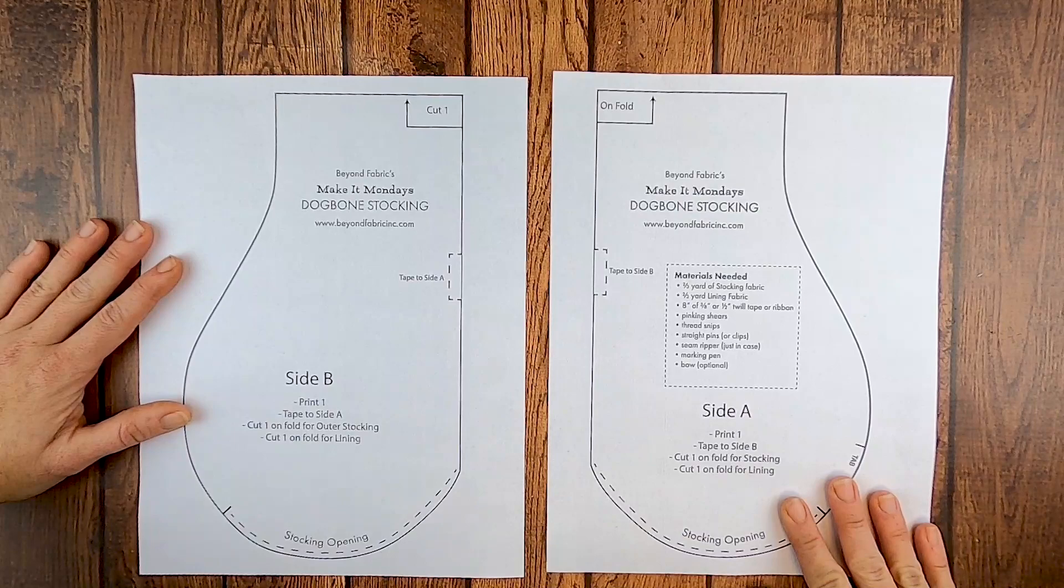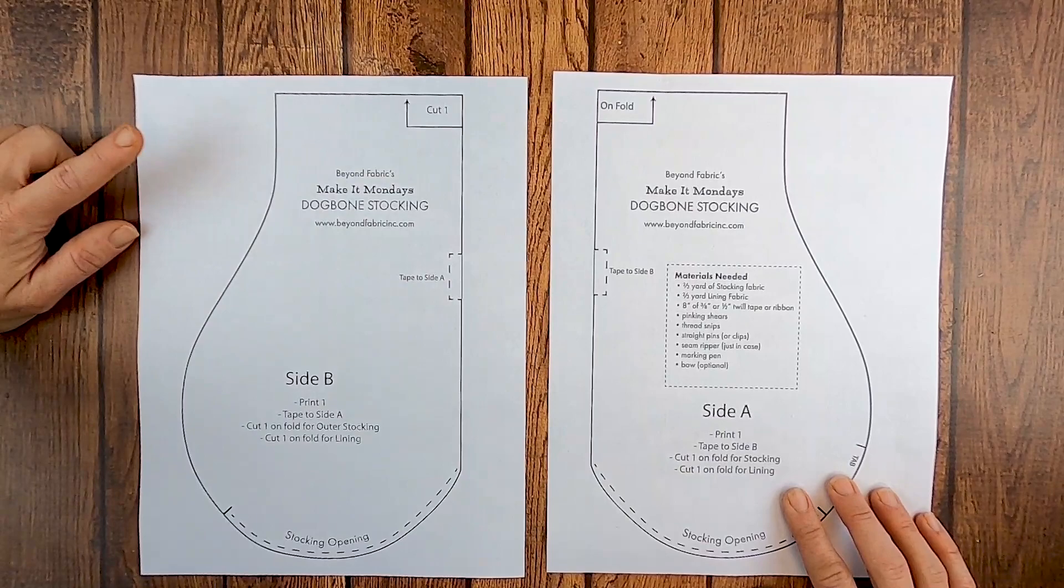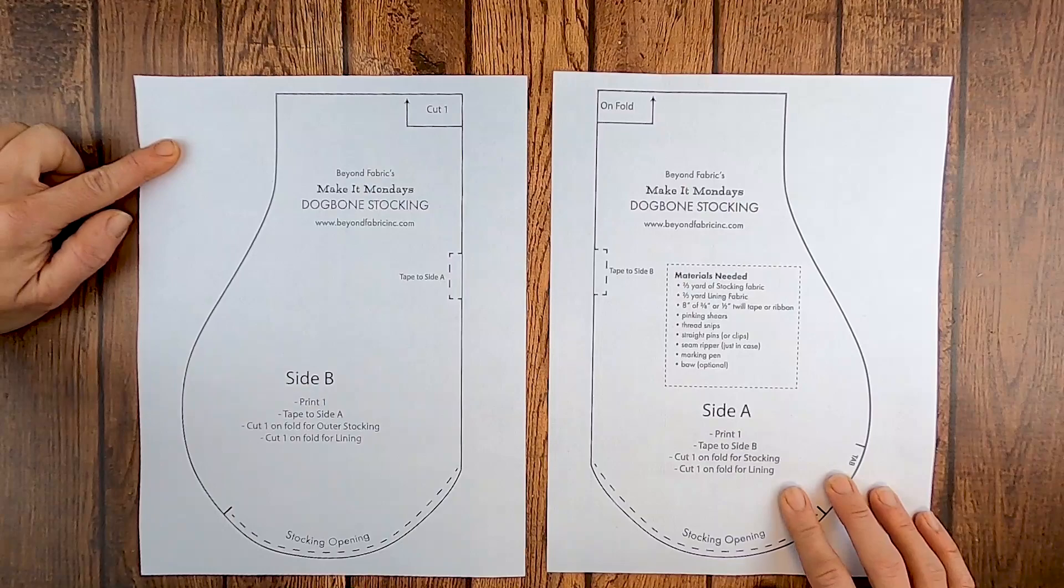So this is what you will print out. There will be a link in the description box below where you can get this free template. There's also going to be a link right here to go to the video for the dog bone stocking if you have no idea what I'm talking about.